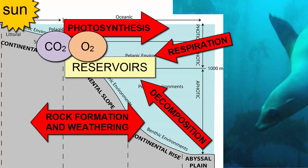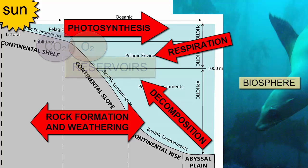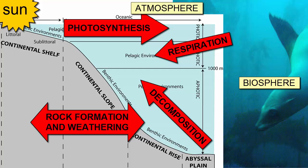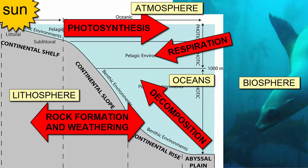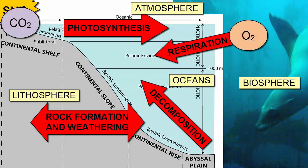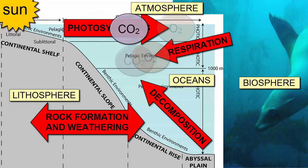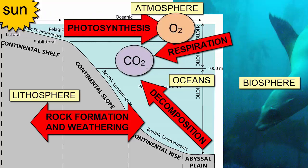The primary reservoirs for the oxygen and carbon dioxide cycles are the biosphere — organic material stored in living organisms — the atmosphere, the oceans, and the lithosphere, stored in rocks. In any given reservoir, carbon dioxide and oxygen are continually moving in and out based on what processes are at work.